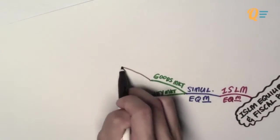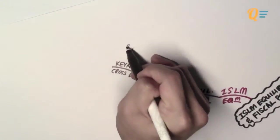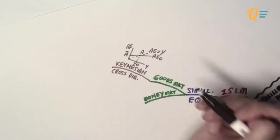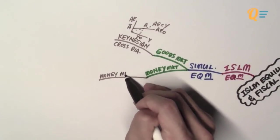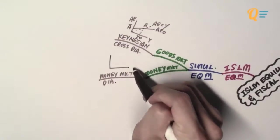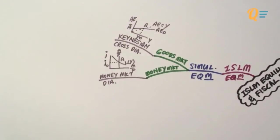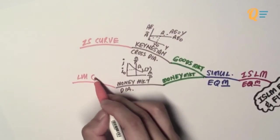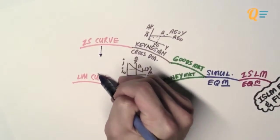To represent the goods market, we make use of the Keynesian cross diagram, which is a graph with aggregate expenditure on the vertical axis and GDP on the horizontal axis. The intersection of a 45-degree line and the AE curve gives you your equilibrium output. As for the money market, we use a money market diagram — a graph with interest rates on the vertical axis and real balances on the horizontal axis — where the intersection of demand and supply of real money gives you your equilibrium interest rate.